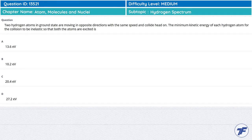Two hydrogen atoms in ground state are moving in opposite directions with the same speed and collide head on. The maximum kinetic energy of each hydrogen atom for the collision to be inelastic so that both atoms are excited is what we need to find.